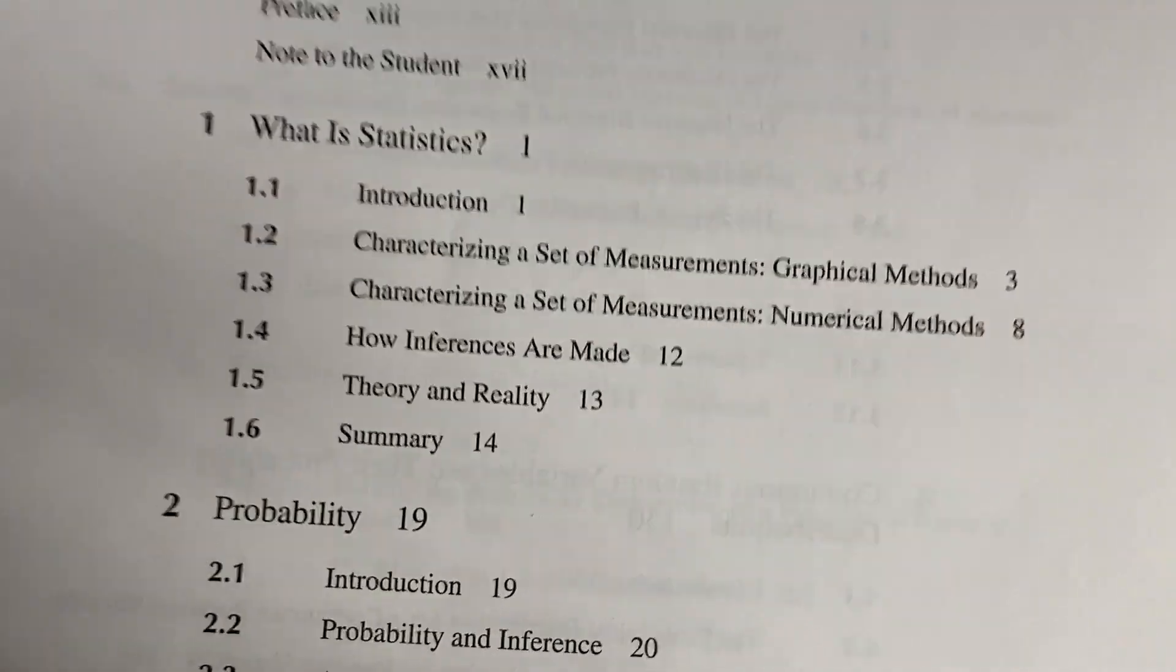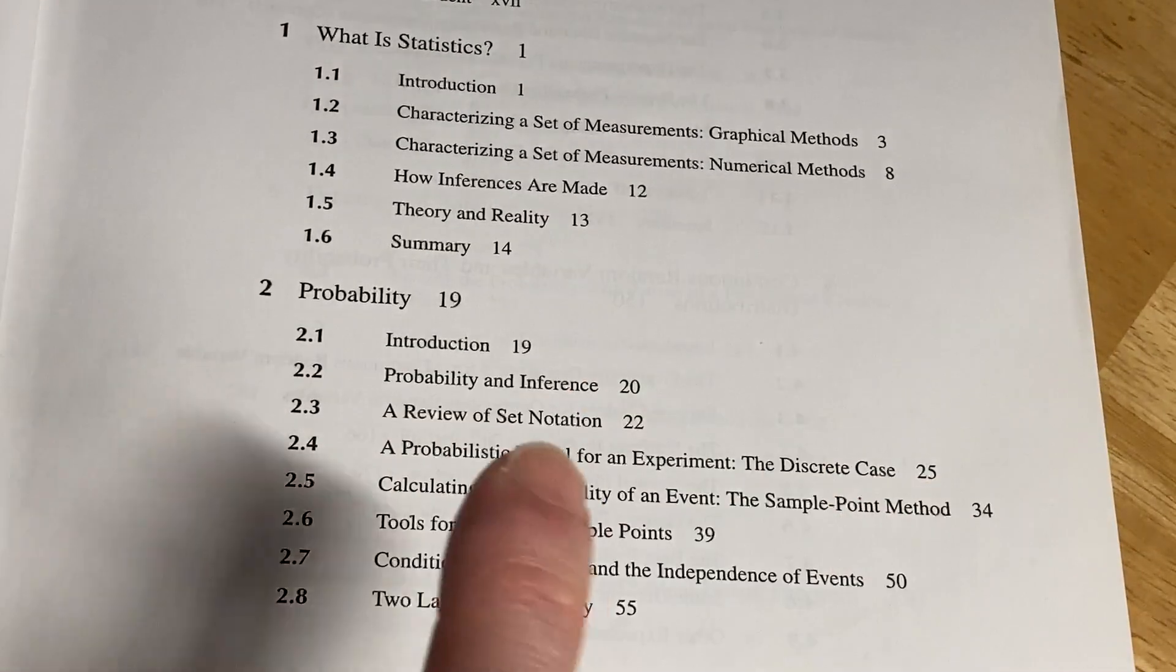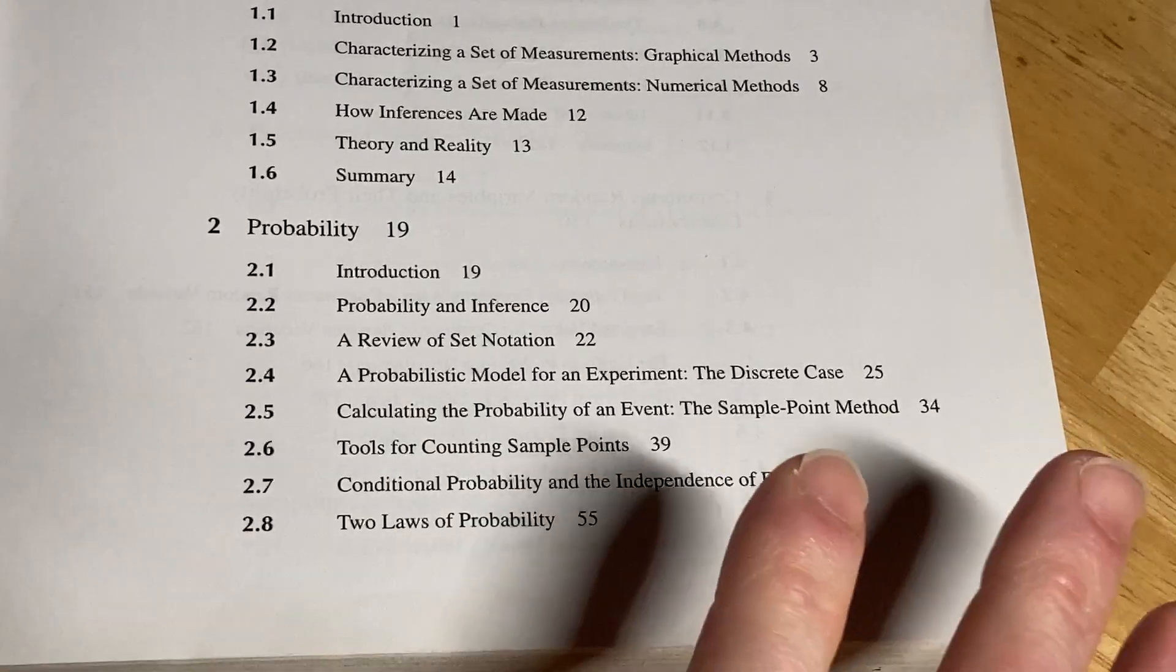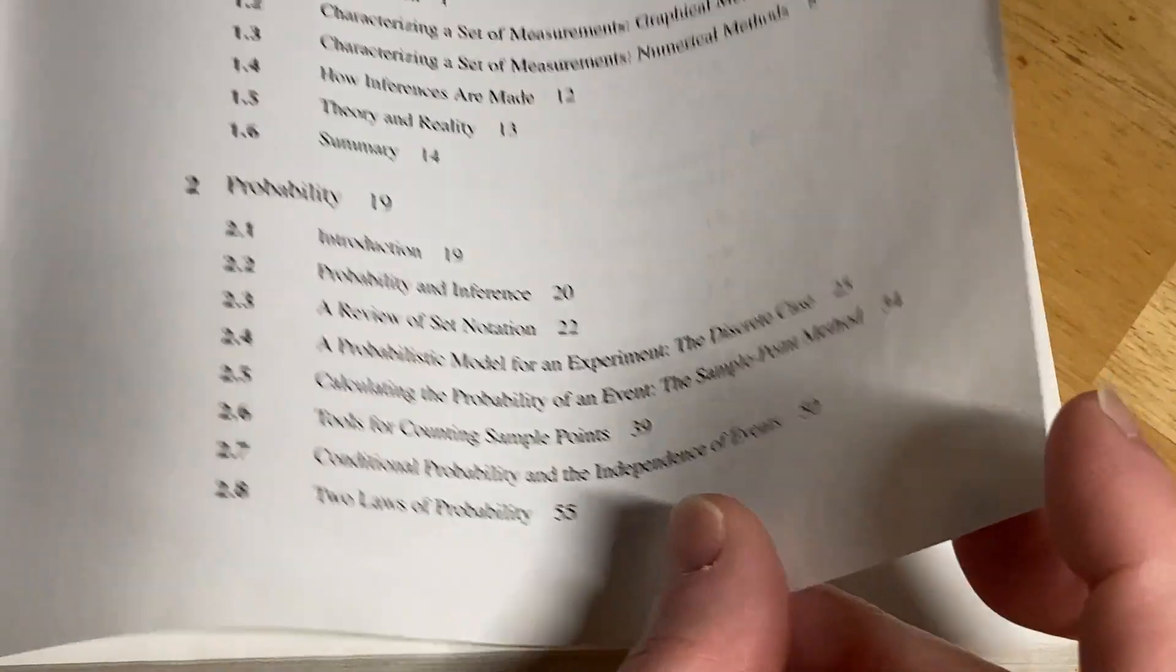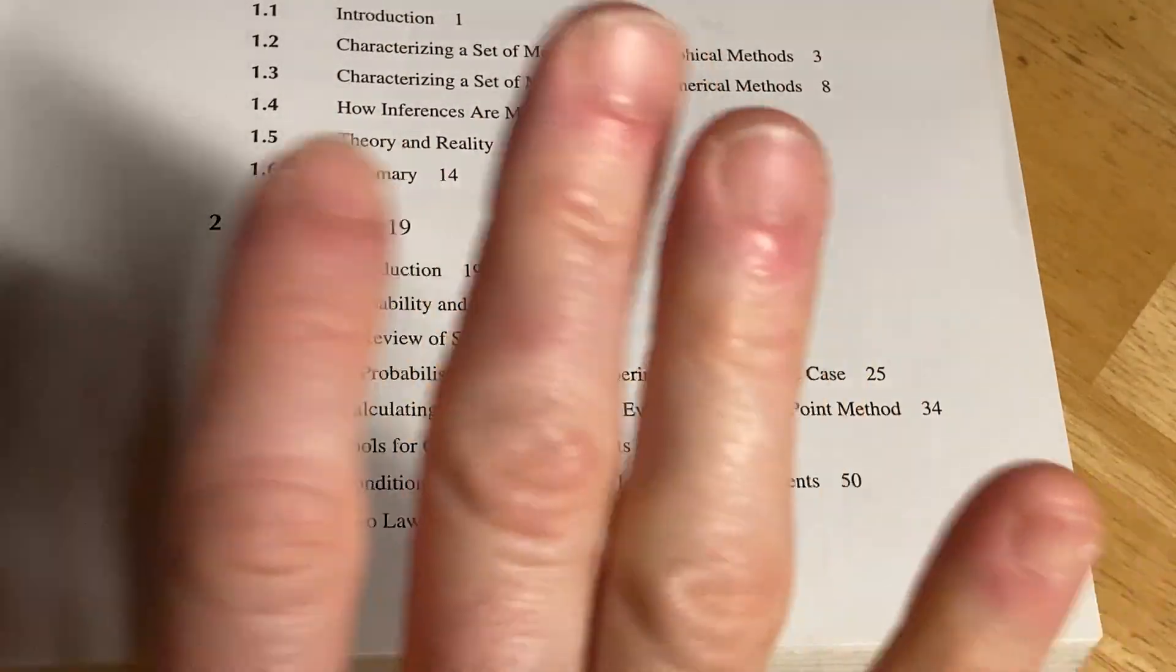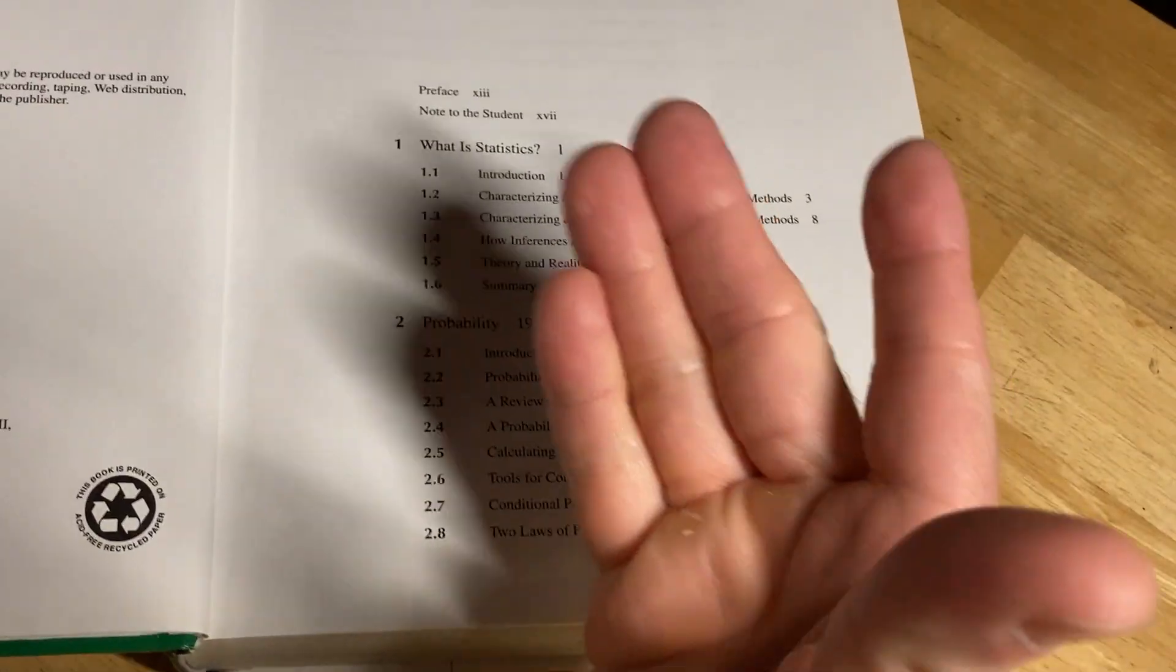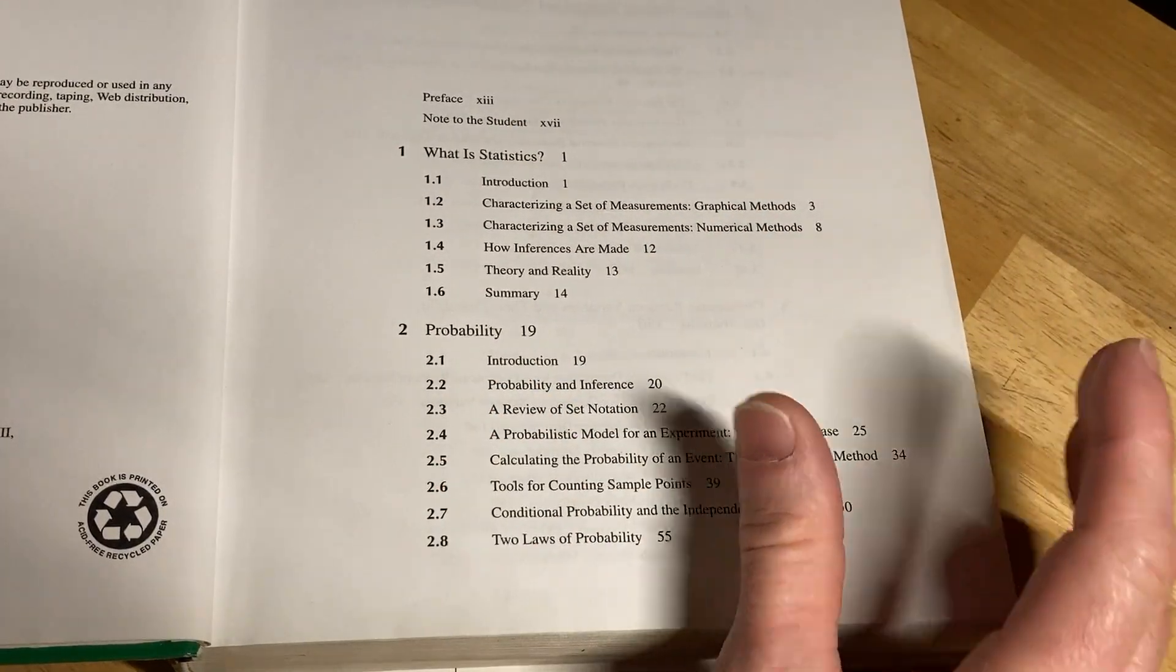What is statistics? It talks about what is statistics. Probability. There is some calculus use, by the way, in this book. Like, you do do some multivariable calculus, but that comes later in the book. Typically, in a college setting, you would be required to take Calc 1, Calc 2, and Calc 3 prior to taking this course or a course on this.